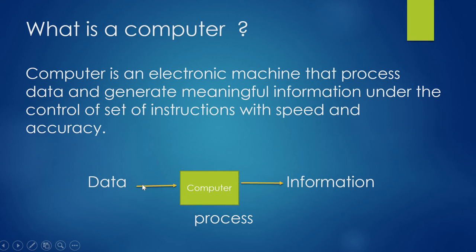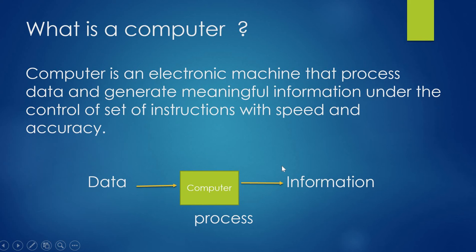For example, suppose we need to add two numbers, 2 and 3. In that case, 2 and 3 are the data, and we are giving the 2 and 3 to the computer. The computer performs the process — here the process is addition — and produces the information. Here the information is 5, that is the result.